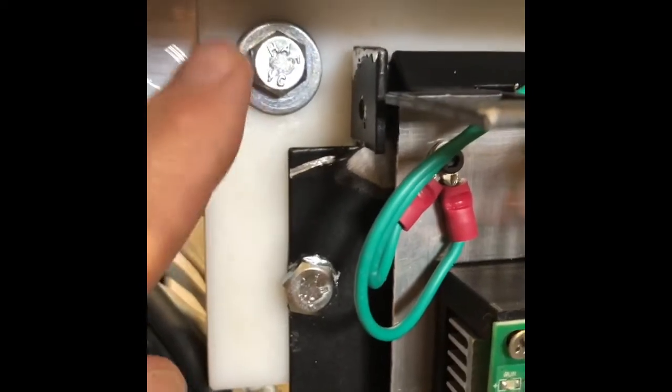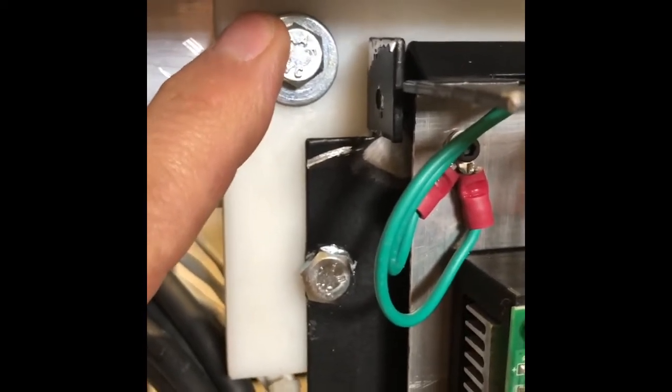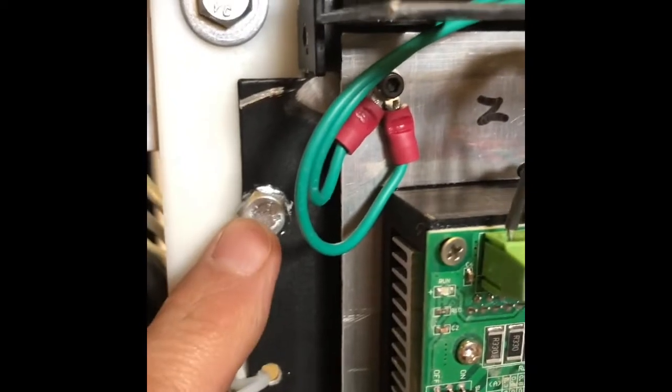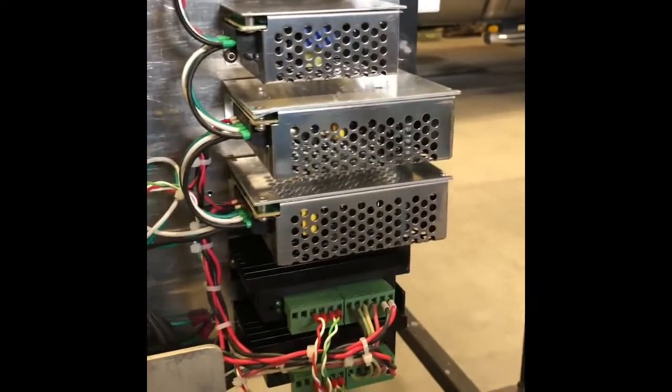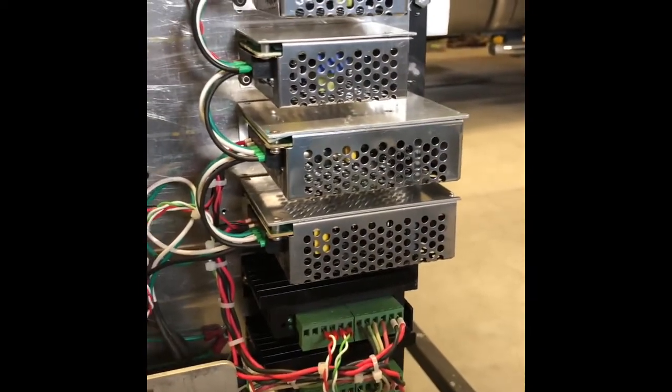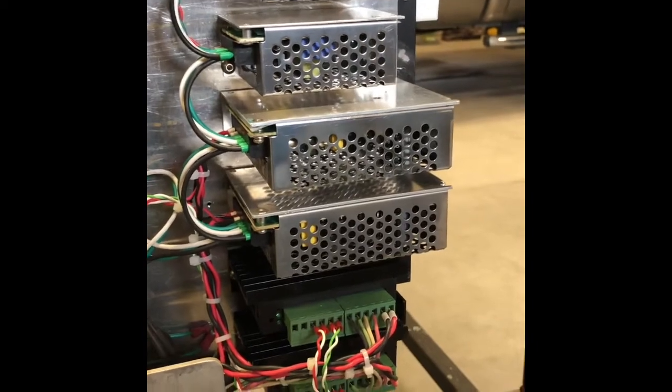So I mounted that to the frame of the table and then mounted the control box to the plastic here. So this entire electronics control box is electrically isolated from the table itself.